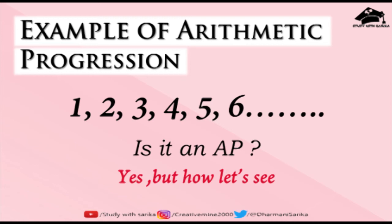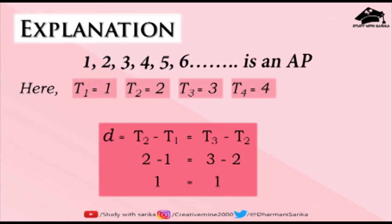For an example of arithmetic progression, I take a very simple example — the counting numbers. We do counting from 1, right? So I have taken the set of natural numbers: 1, 2, 3, 4, 5, 6, till infinity. Is this an AP? I would say yes. The counting numbers starting from 1, 2, 3, 4 — yes, it is an arithmetic progression.